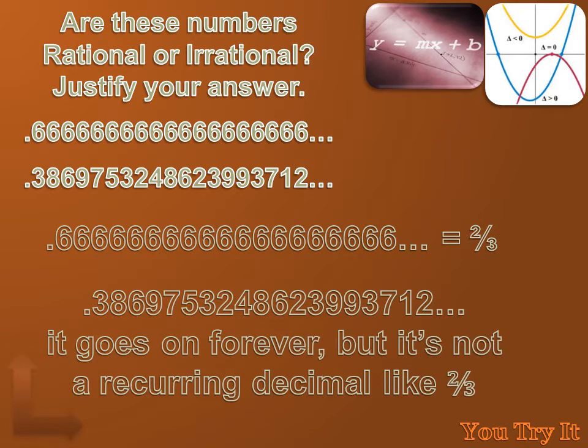How about 0.38697532, and it keeps going on. It does go on forever, like 0.66666, but it's not a recurring or repeating decimal like 2 thirds. So it's not a rational number. It's an irrational number.